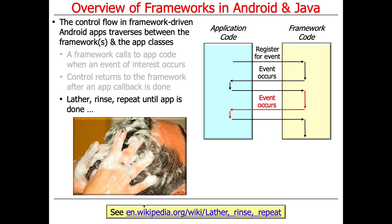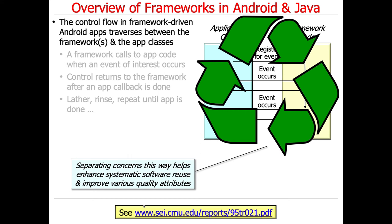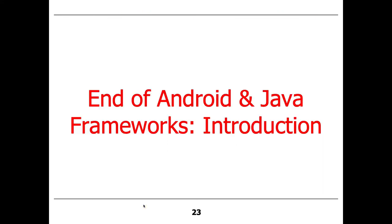By doing things this way, we enhance systematic software reuse and improve other quality attributes such as modularity, reusability, extensibility, and reliability, because that framework code is amortized over many hundreds of thousands or millions of use cases. So hopefully, over time, you shake out all the bugs and defects in the code, and it becomes very clean and easy to use.